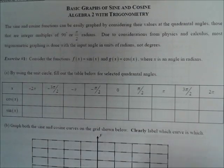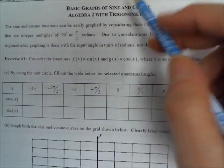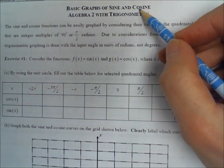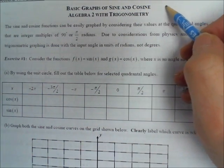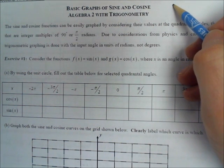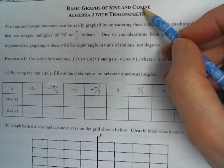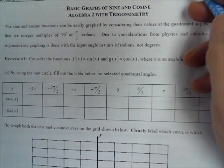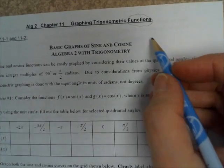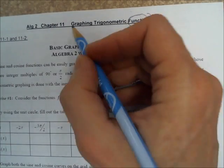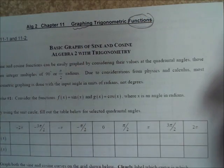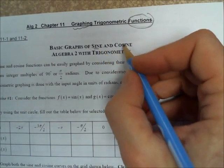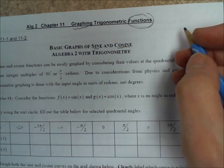All of the calculations we've done so far — calculating sine, cosine, tangent, cotangent, cosecant, and secant — all six of those are functions. And one of the things we can do with functions is graph them. That's what we're going to do today: talk about the sine function and the cosine function as a graph.